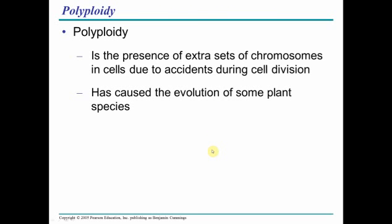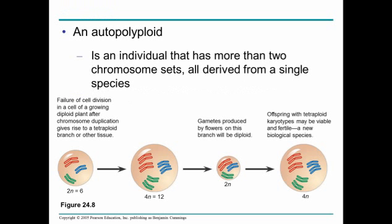Polyploidy is the presence of extra chromosomes due to accidents in cell division. For us, for example, chromosome 21 causes Down syndrome, but in some organisms polyploidy can create a new species entirely, and all their descendants will be polyploid as well — such as in some plants and even some animals, such as the chinchilla, in fact.